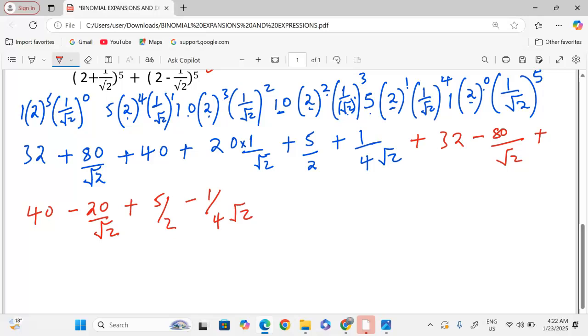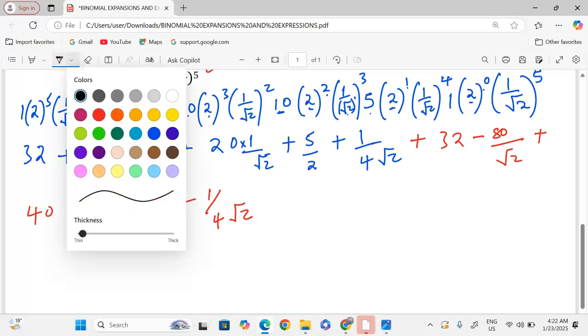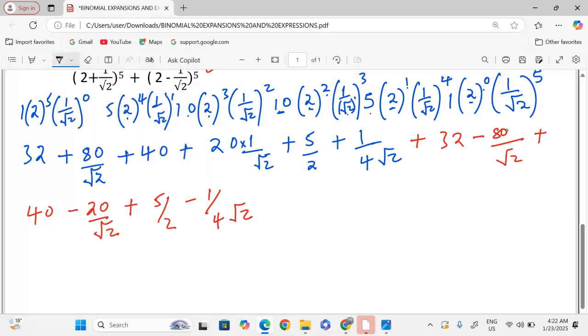So, now we can compile like terms. Whereby 32 and 32 gives us 64. Then, 80 over root 2 and 80 over root 2 cancels. Now, 40 and 40 are positive, so they give us 80.